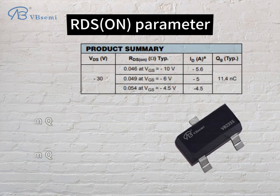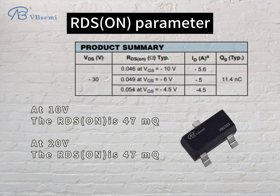RDS(on) parameters: at 10V, the RDS(on) is 47mΩ; at 20V, the RDS(on) is also 47mΩ.